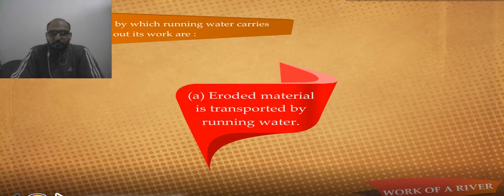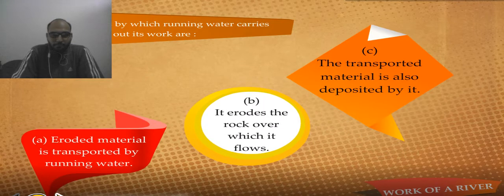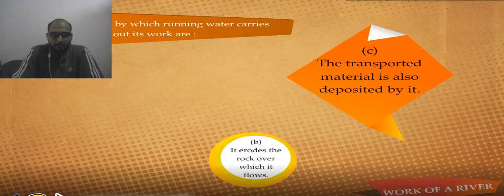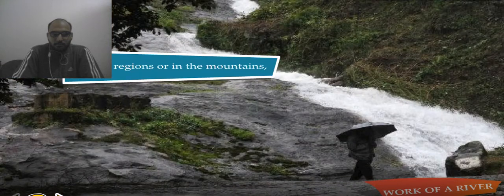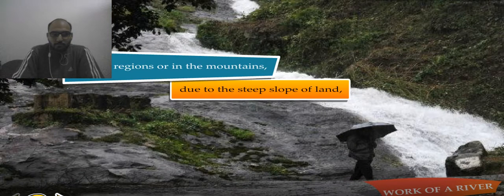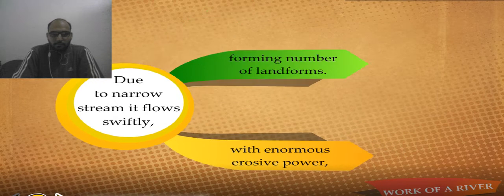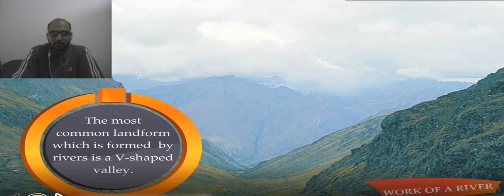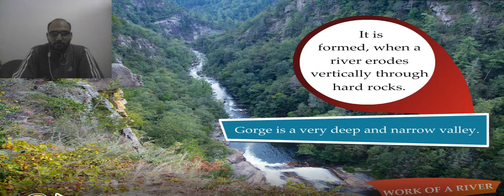The function of a river varies with the volume of water it carries. The slope of a riverbed also plays a vital role. In hilly regions or in the mountains, due to the steep slope of land, the river carries a small volume of water. Due to the narrow stream, it flows swiftly with enormous erosive power, forming a number of landforms. The most common landform formed by rivers is the V-shaped valley. A gorge is a very deep and narrow valley, formed when a river erodes vertically through hard rocks.